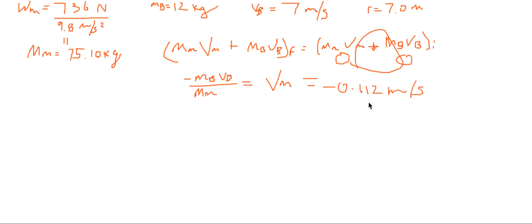That's negative because if you throw the book to the north, the man is going to move to the south. Positive x direction versus negative x direction — it's just showing the direction of movement.